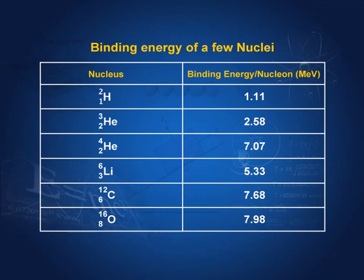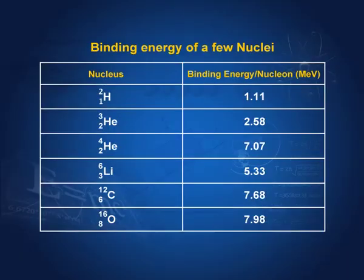Here we have the deuterium isotope of hydrogen, with binding energy 1.11 MeV per nucleon. Helium-3 has binding energy 2.58 MeV per nucleon, and helium-4 has binding energy 7.07 MeV per nucleon. Similarly for lithium, carbon, and oxygen their binding energies per nucleon are given. If you want the total binding energy, multiply by the number of nucleons. For oxygen, for example, with 16 nucleons, the binding energy would be 16 times 7.98 MeV.